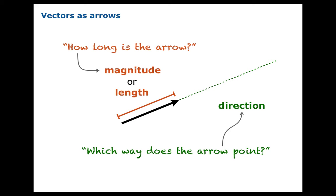Measuring the direction isn't quite as obvious as measuring the magnitude or length of the vector, so we'll have more to say about that later. Two terms we'll use throughout these notes are the tail and the tip of the vector. You could also think of these as being the alpha point or beginning point, and the omega point or end point of the vector, but we'll call them the tail and the tip.